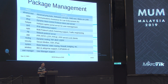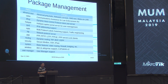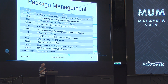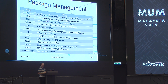Looking at package management — this is a capture from an MT CNA class — we have Advtools, Calea, DHCP, hotspot, and others. MPLS is used for MPLS and traffic engineering. Routing is only for dynamic routing: RIP, BGP, OSPF — static routing stays in the system. So if the customer only uses static routing, why do we put the routing package on the router? If the customer doesn't use IPv6, why do we put IPv6 there?